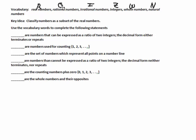What are the numbers that can be expressed as a ratio of two integers? The decimal form either terminates or repeats. Look at the word here, it says ratio. Another word for ratio is rational. Take the N-A-L away and we're left with ratio. Another word for that is a fraction. So here we have the rational numbers, Q.